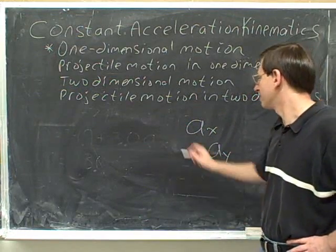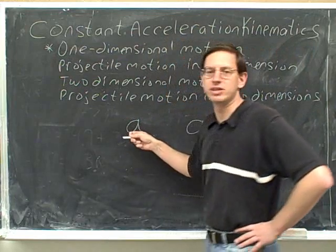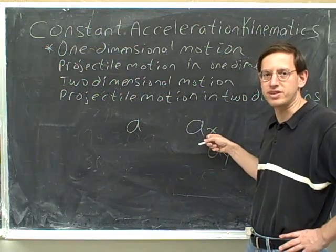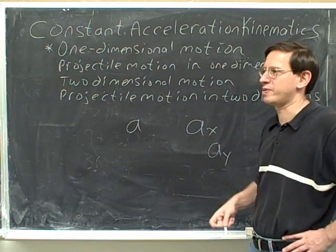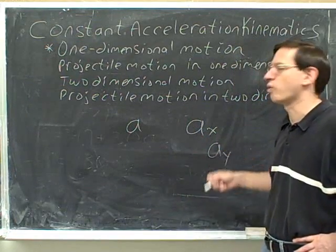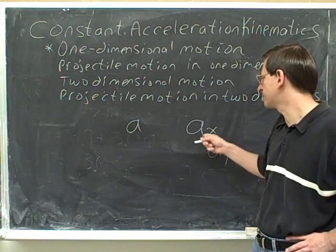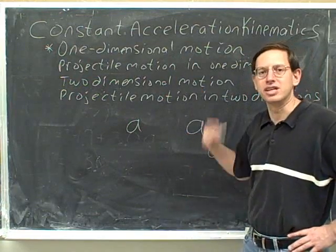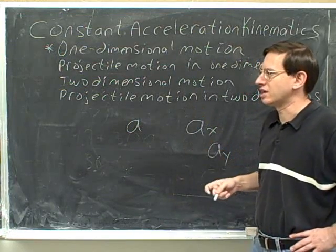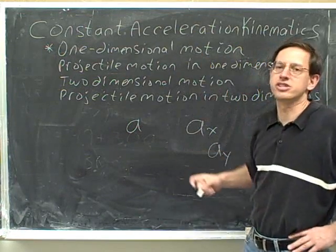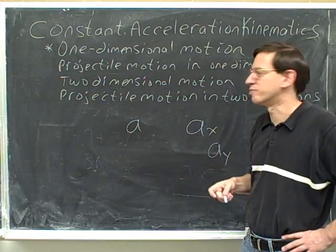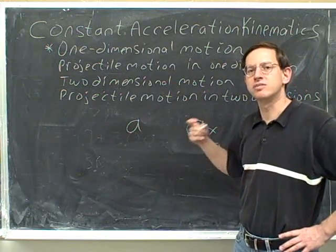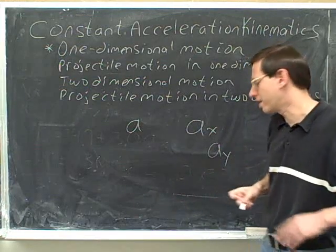I'm not going to use just the plain symbol for acceleration. Instead, I'm either going to say the X acceleration (A sub X) or maybe the Y acceleration (A sub Y). I'm always going to specify which axis we're using. I might be using a little more notation than your textbook would for one-dimensional motion, but that's because I think it will better prepare us for two-dimensional motion, where we'll have both an X and a Y axis.